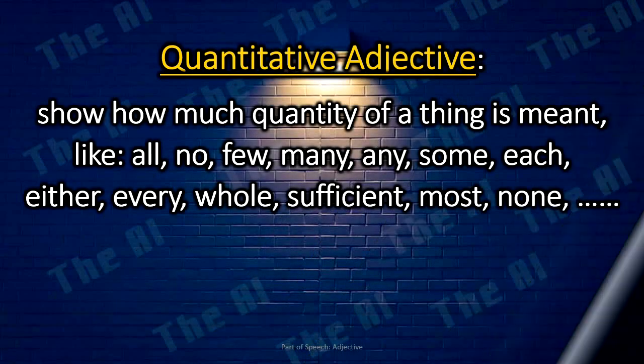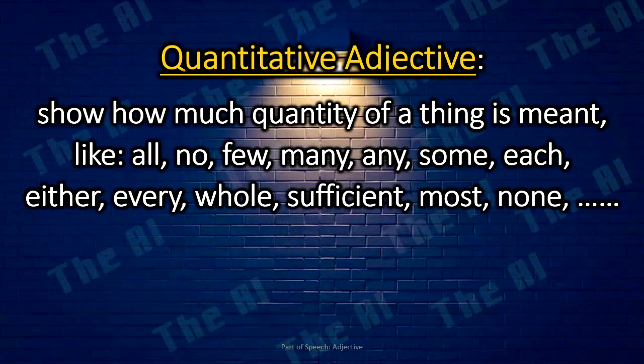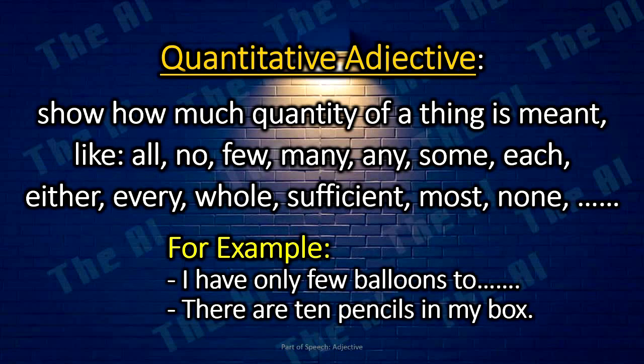Adjectives of quantity show how much of a thing is meant, like all, no, few, many, any, some, each, either, every, whole, sufficient, most, none, and little. For example: I have only a few balloons to decorate the room. There are ten pencils in my box.